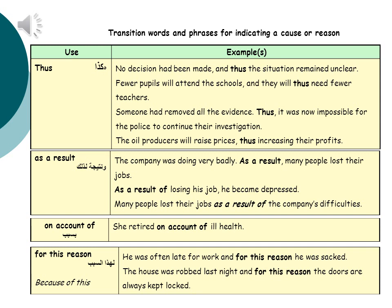The next transition phrase is 'on account of', which simply means 'because'. Example: She retired on account of ill health. And the last transition phrase is 'for this reason', which also means 'because'. Examples: He was often late for work and for this reason he was sacked. The house was robbed last night, and for this reason the doors are always kept locked.